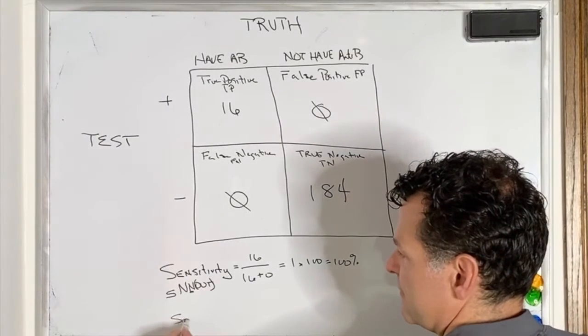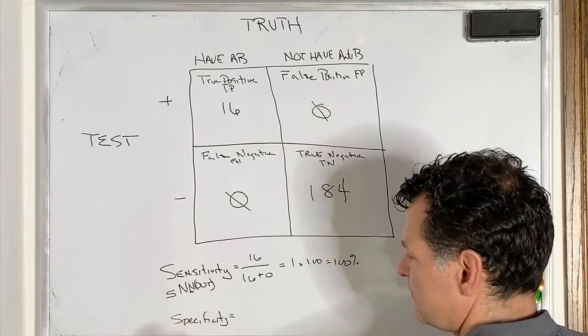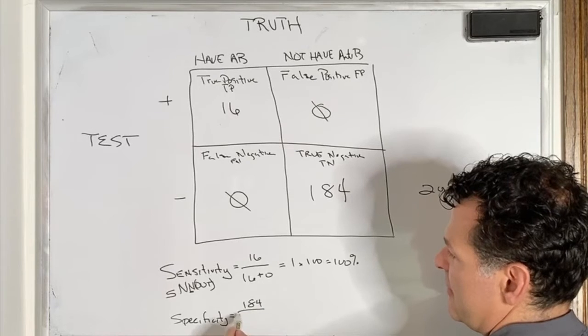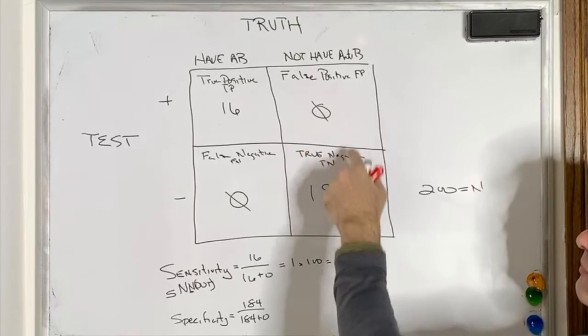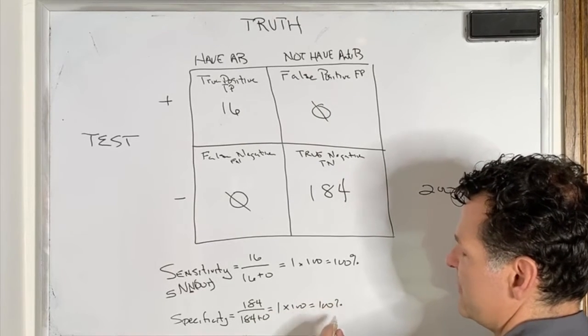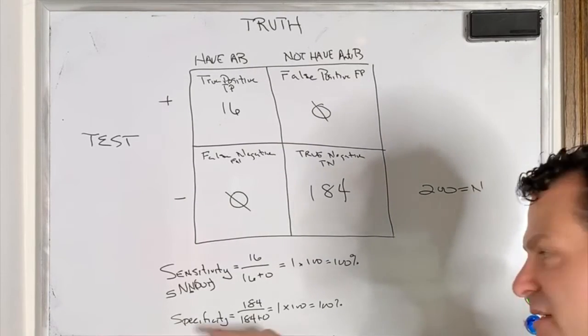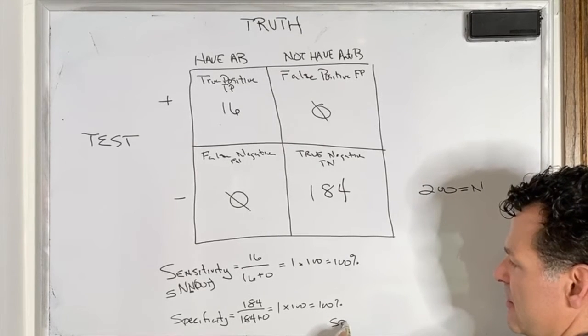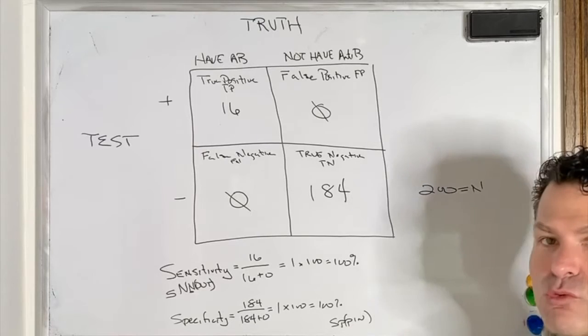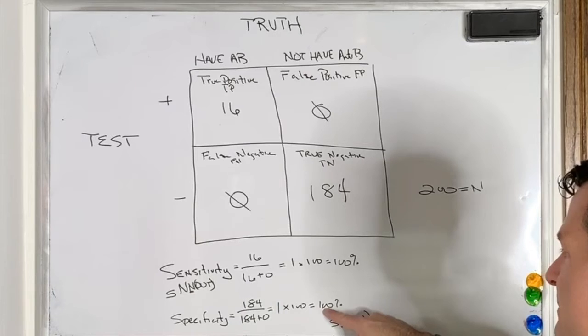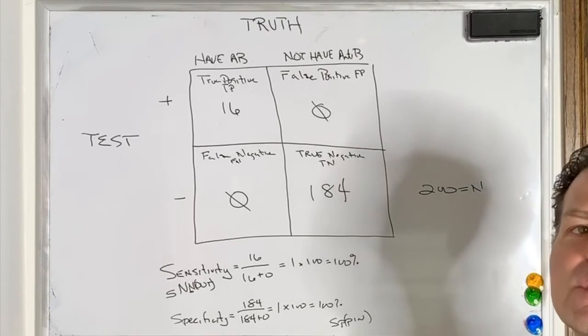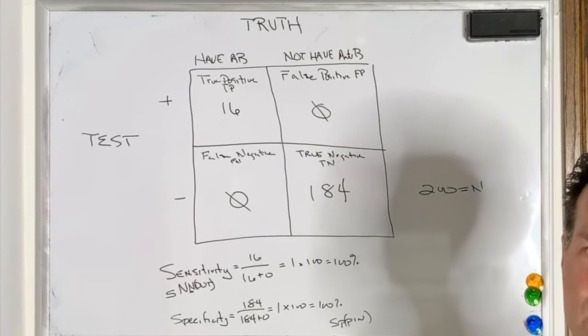So my specificity is going to be taking the numbers in this column, so we would take 184 and then the total number that do not have the antibodies, and this again is equal to 1, times it by 100, and that would give us 100%. Specificity, a positive specificity, so in this case we use the acronym SPIN. Specificity, a positive test helps me rule whatever we're looking for in. So in this case 100% specificity would tell me that if the person tested positive for the antibodies, I can 100% tell you that you have antibodies. There's no false results.